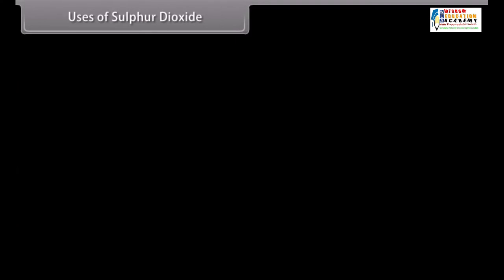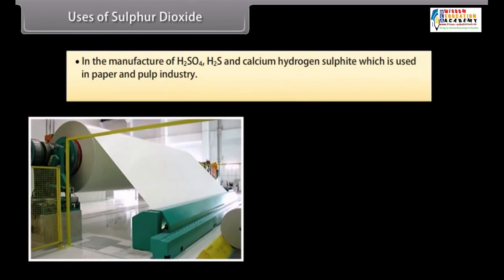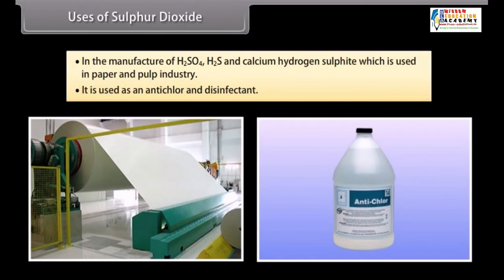Uses of Sulphur Dioxide. The important uses of Sulphur Dioxide are following. In the manufacture of H2SO4, H2S and calcium hydrogen sulphide which is used in paper and pulp industry. It is used as an anti-claw and disinfectant.